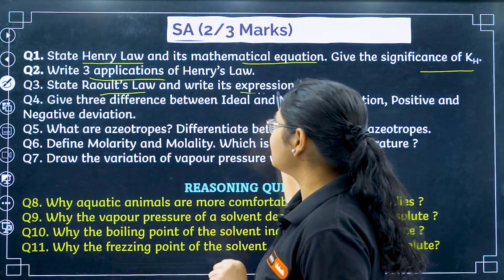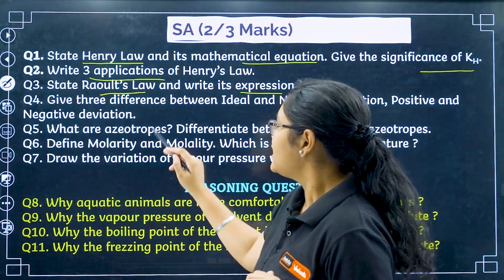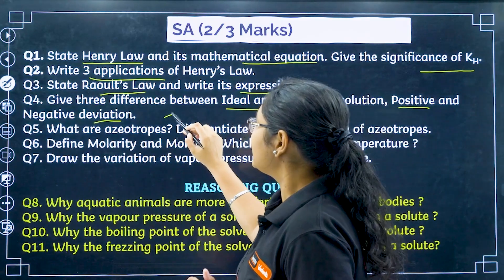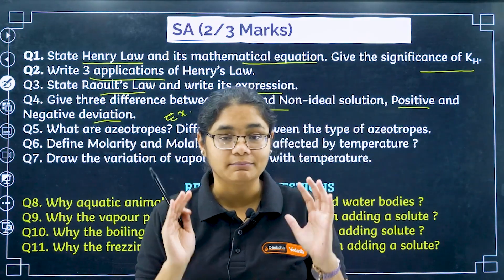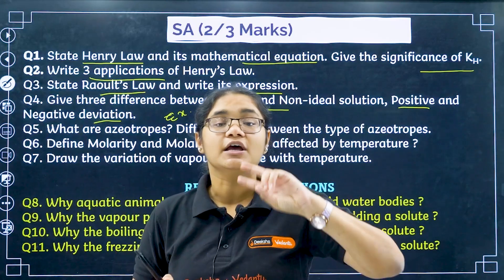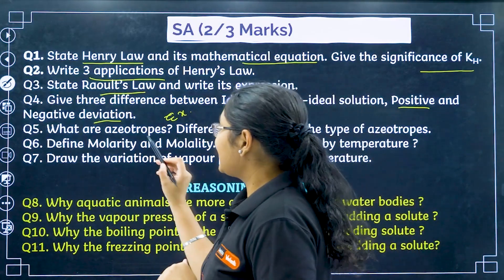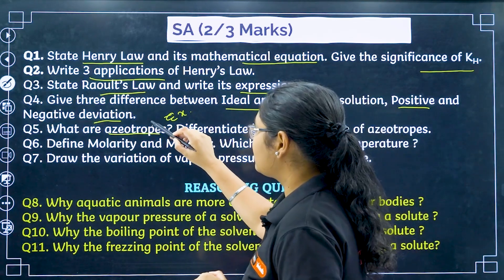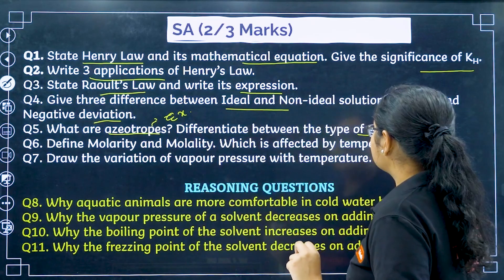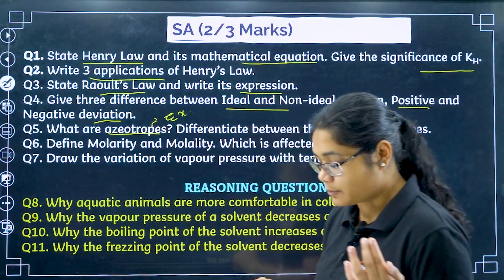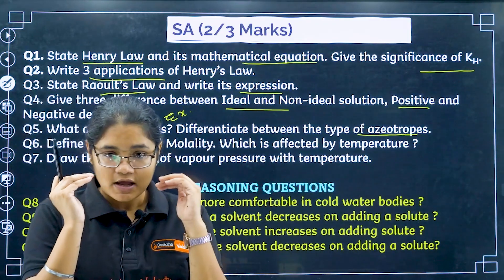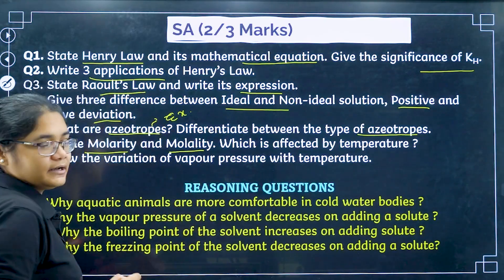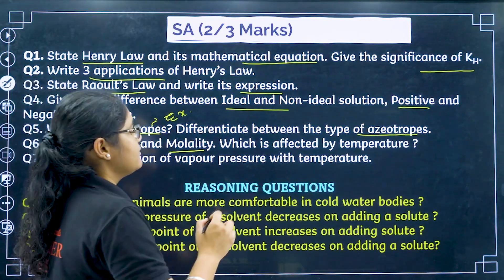Next is Raoult's Law and its expression — that is also important. Know three differences between ideal and non-ideal solutions, and between positive and negative deviations. Examples are very important here; remember at least two examples for each. Next, azeotropes — their definition and examples are important. Know the positive (maximum boiling) azeotrope and minimum boiling azeotrope, their differences and examples.